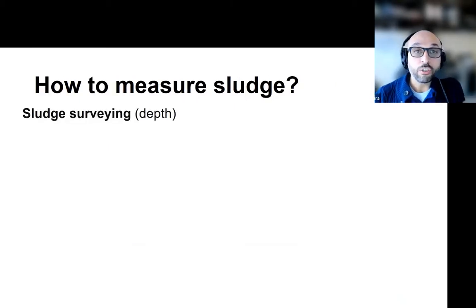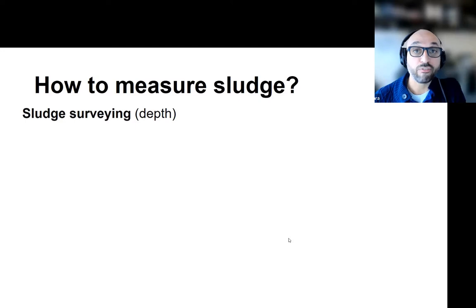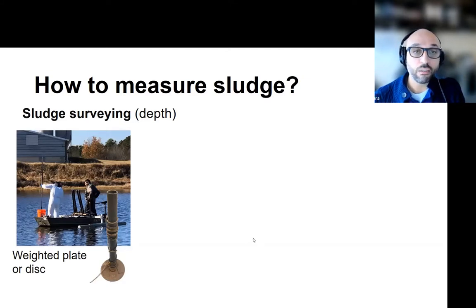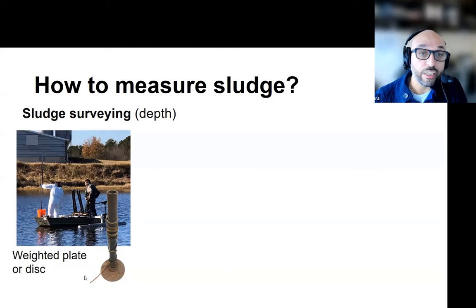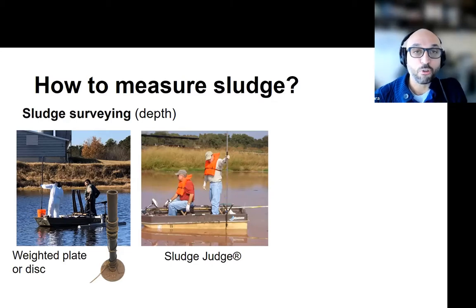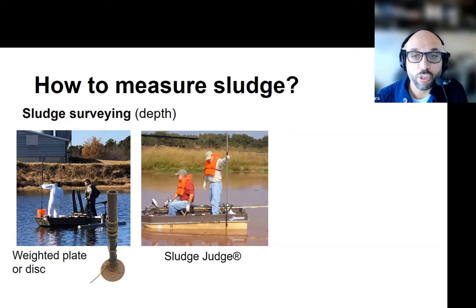We measure sludge in typically two ways. The first way is to survey, which means to determine the depth to the sludge in order to determine its volume in our structure. It's much easier if we have an open lagoon. As you can see in this picture, there is a weighted plate - the method is to determine depth all the way to the bottom, which is the liner, and then use a weighted disc to determine the depth where it settles on top of the sludge layer. Alternatively, there is a sludge judge, which is a commercial product that is essentially a large straw to collect a complete column of the lagoon and retrieve it, and using visual observation you can determine the transition from a liquid to a sludge phase.